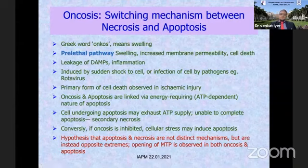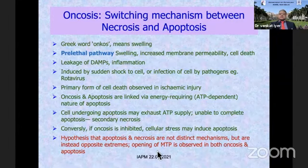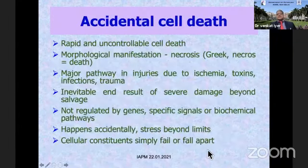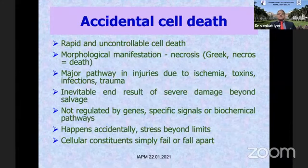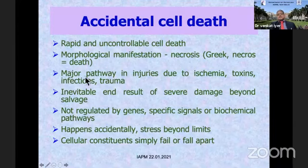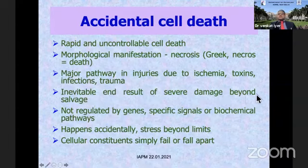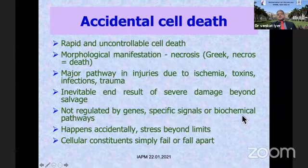The hypothesis of oncosis is that apoptosis and necrosis are not distinct mechanisms but opposite extremes, and opening of the mitochondrial transition pore is observed in both. We now call them accidental cell death — a rapid, uncontrolled cell death. Morphological manifestation is necrosis. It is a major pathway in injuries due to ischemia, toxins, infections, and trauma. It is the inevitable end result of severe damage beyond salvage. It is not regulated by genes; no specific signals or biochemical pathways are involved. It happens accidentally when stress is beyond the limits and cellular constituents simply fail or fall apart.